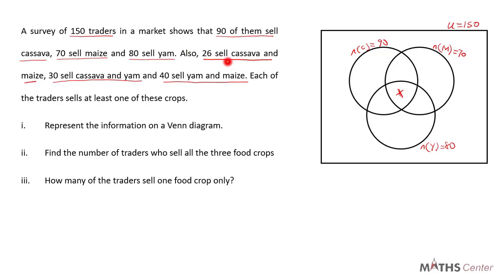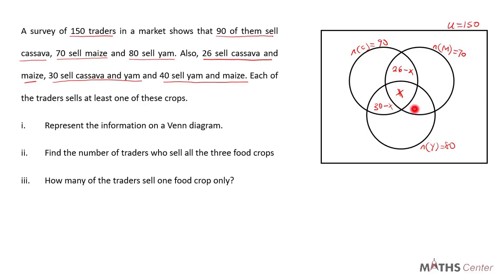Since 26 sell cassava and maize, and x sell all three, those who sell cassava and maize only = 26 − x. Similarly, since 30 sell cassava and yam, those who sell cassava and yam only = 30 − x. And since 40 sell yam and maize, those who sell yam and maize only = 40 − x.